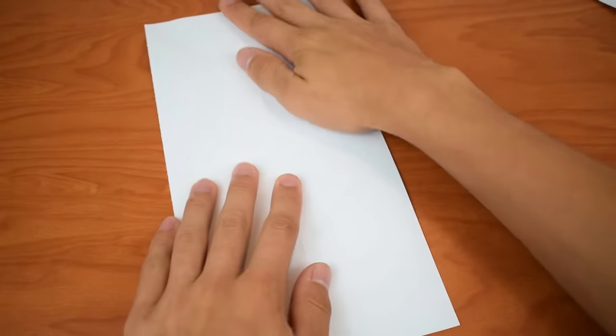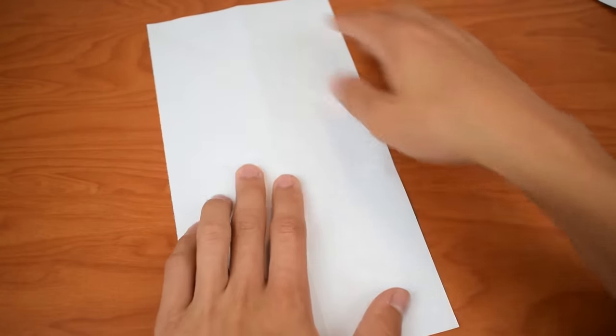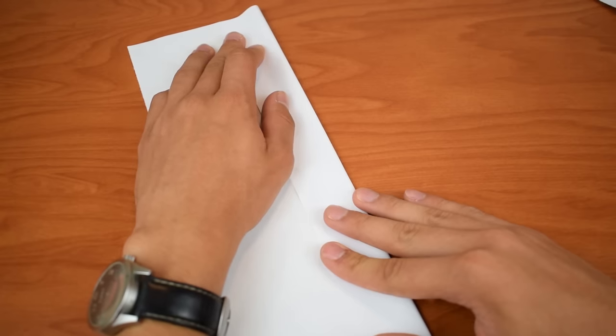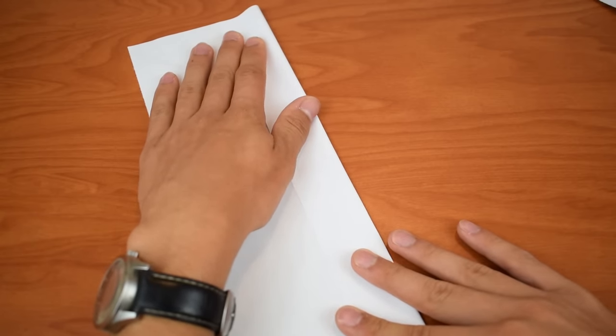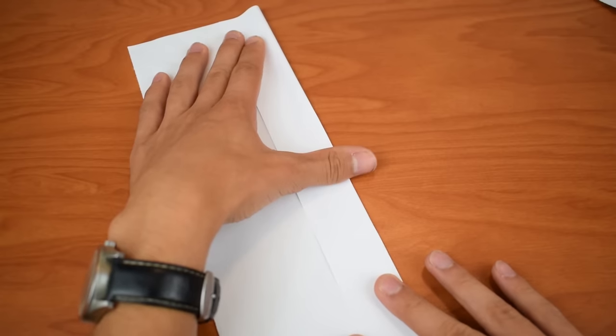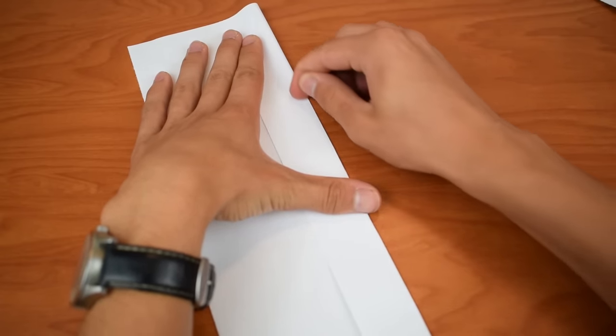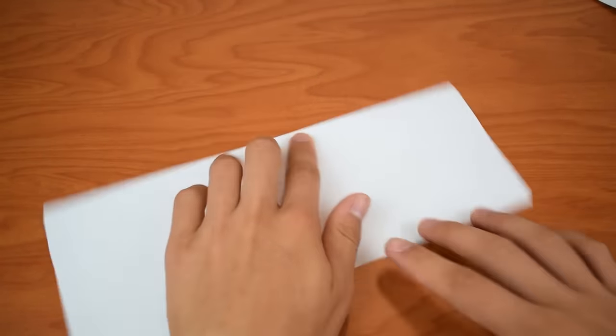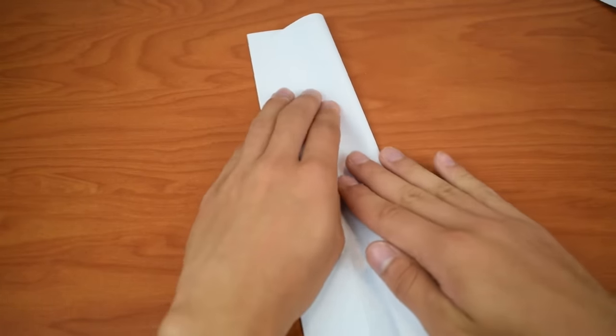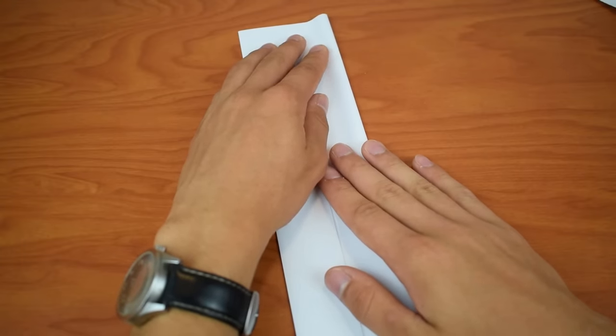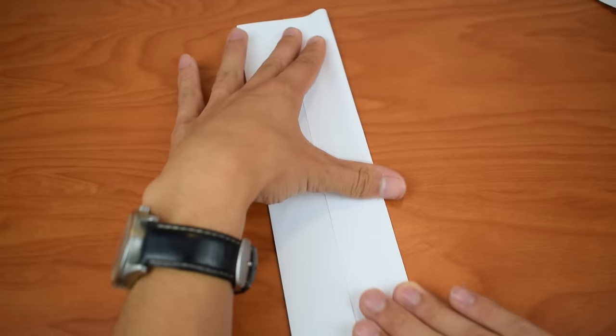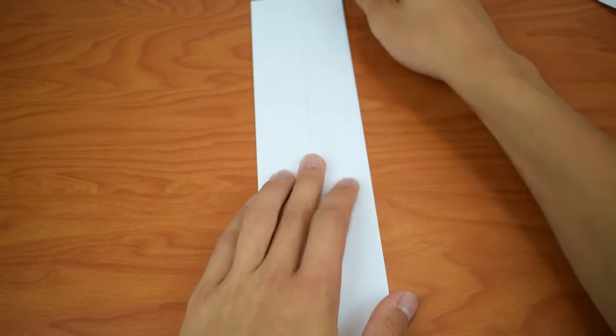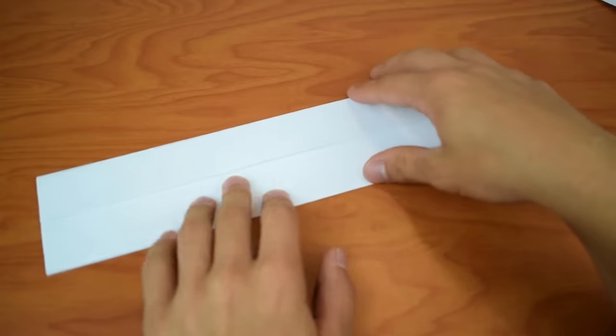Now I'm going to unfold and we're going to fold these edges into that center crease, this one as well. Now that we've done that, let's rotate it 90 degrees again.